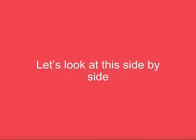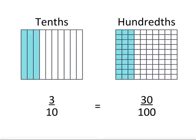Let's look at this side by side. You can see the same fraction represented as tenths and hundredths. So 3 tenths is equal to 30 hundredths.